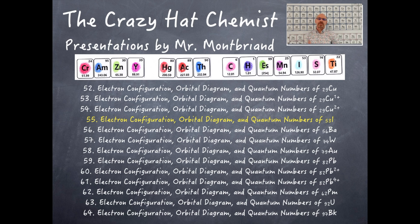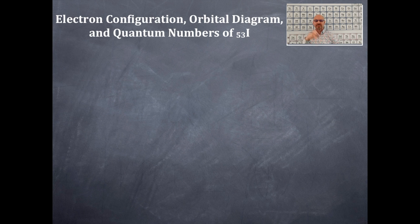Welcome to the Crazy Heck episode. Today another video in atomic structure and electron configuration. So let's get moving. Today we're going to be talking about the electron configuration, orbital box diagram, and quantum numbers for iodine.